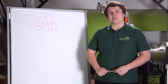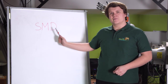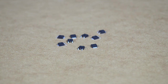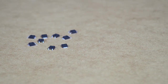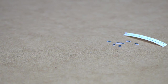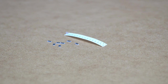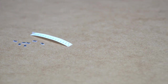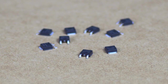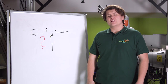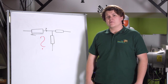In surface mount devices, analogous to the previous method, the first two or three digits tell us about a certain number and the last one about the number of zeros. For example, the designation '105' means we have 10 and we have to add five zeros — so we have 1 megaohm. For small values, a surface comma is used: '0R1' means we have 0.1 ohm.